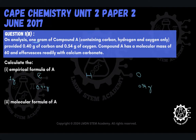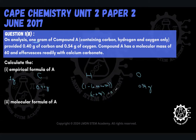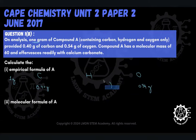By doing a little bit of subtraction, if we want to find what mass of this one gram was in fact made up of hydrogen, then all we would do is 1 minus (0.40 plus 0.54). That would be subtracting 0.94 from 1, which would yield a mass of 0.06 grams. So that's what the grams of hydrogen was.